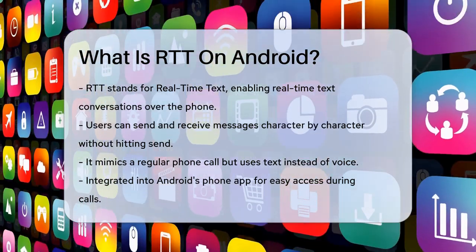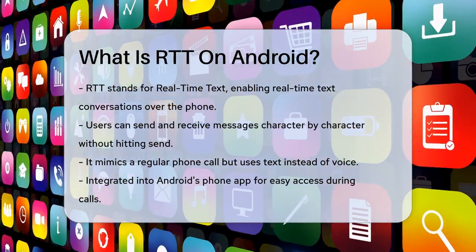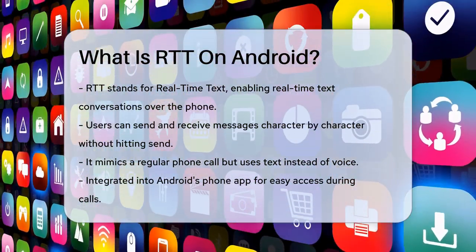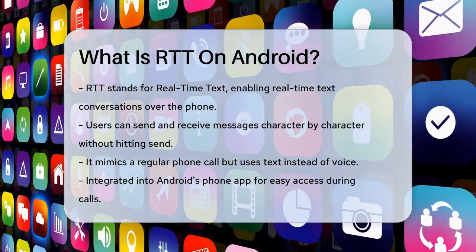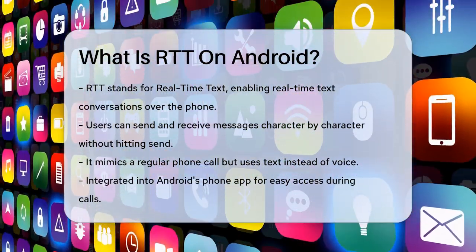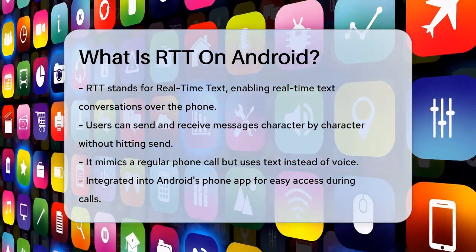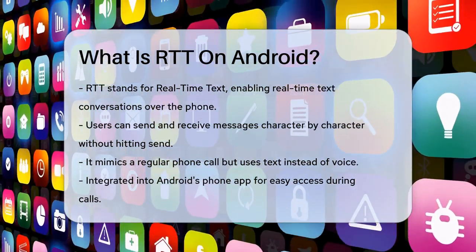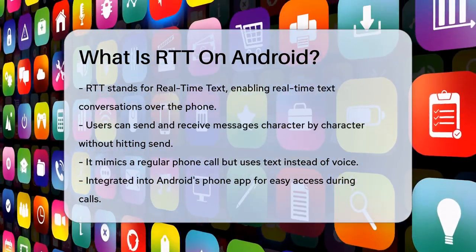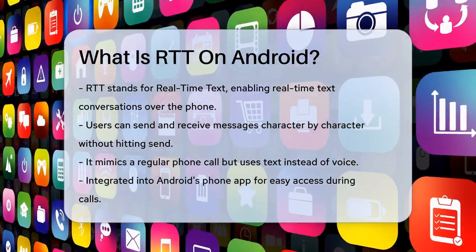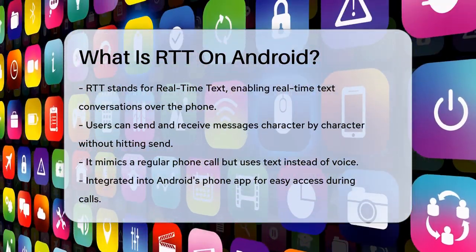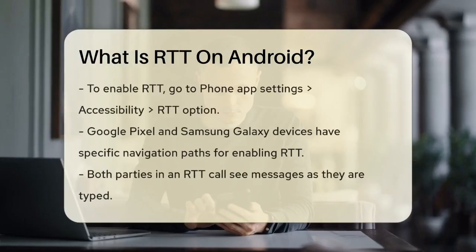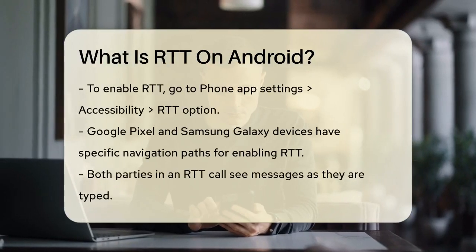RTT is a technology that allows users to send and receive text messages in real-time, character by character, without needing to hit the send button. This makes it feel just like a regular phone call, but with text instead of voice. On Android devices, RTT is integrated into the phone app, allowing users to switch between voice and text during a call.